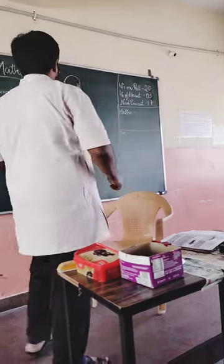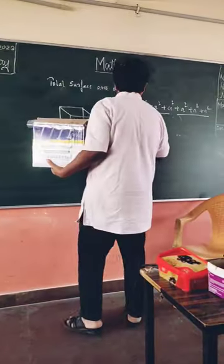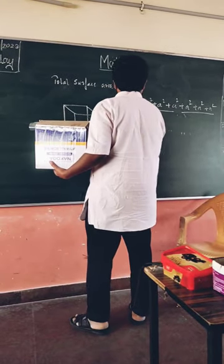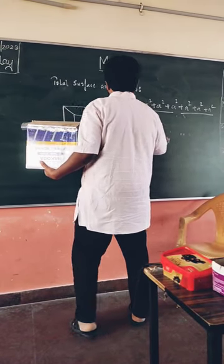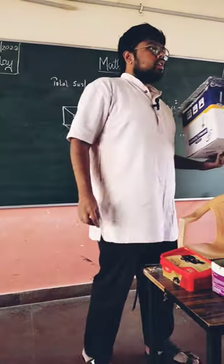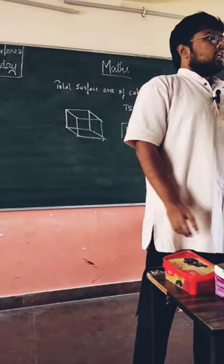So, what will be the formula for the total? Six A square. Therefore, TSA of cube is how much? Six A square.